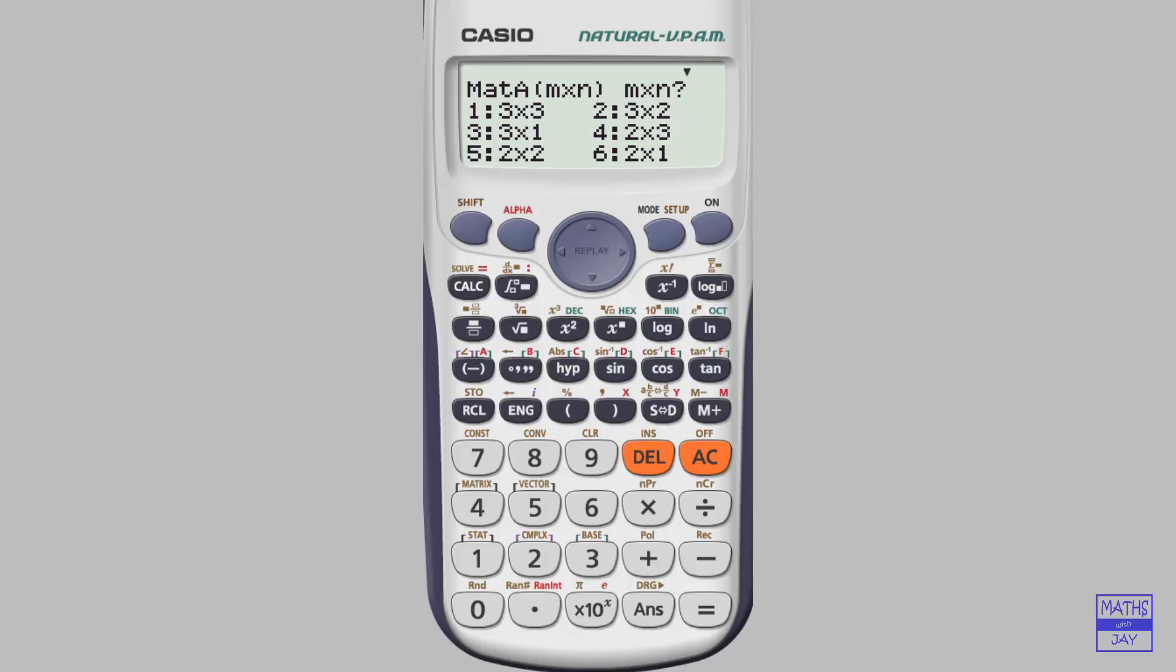And if you're going to be finding the inverse of a matrix, it needs to be a square matrix, so you would either want to choose 1 or 5 at this stage. We're going to go for a 3x3, so that's number 1.